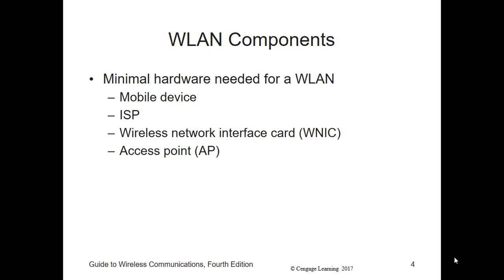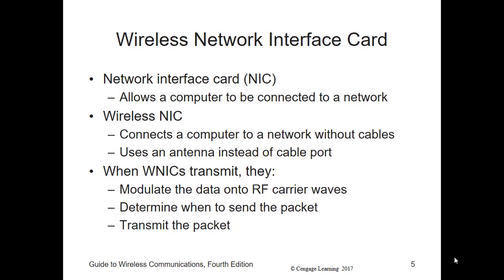A wireless NIC performs the same functions as the wired NIC with one major exception — there is no wire coming out of the back of it. In its place, there is an antenna to send and receive the RF signal. Specifically, when a wireless NIC transmits, it modulates the data onto an RF carrier wave and determines when to send and transmit the packet.